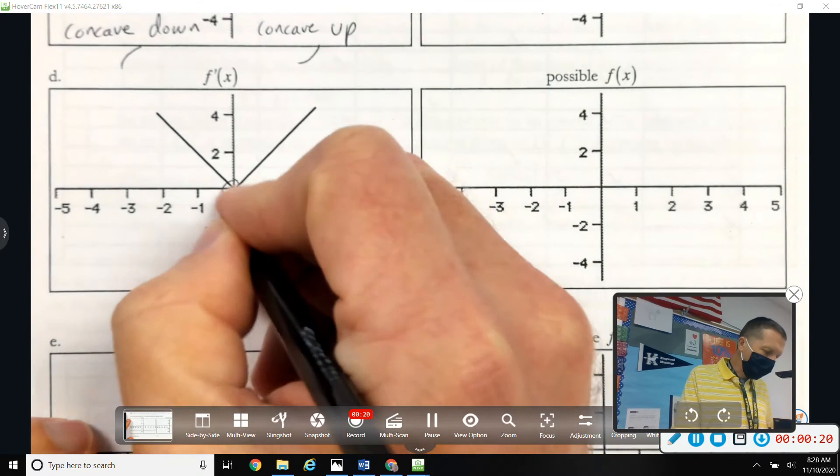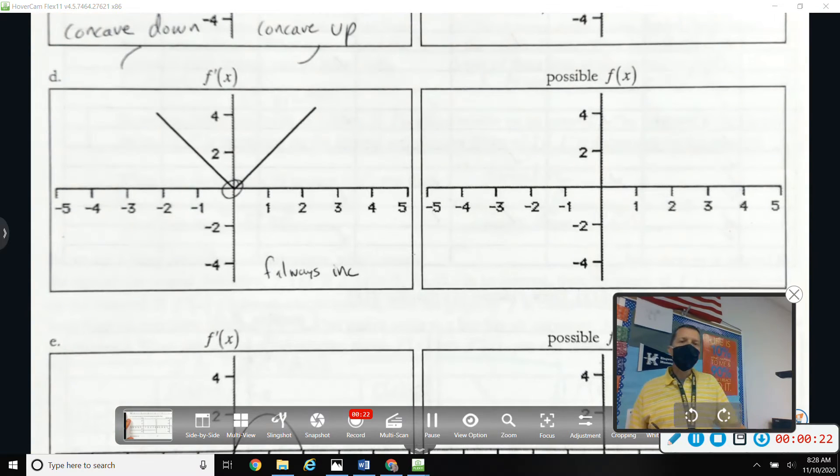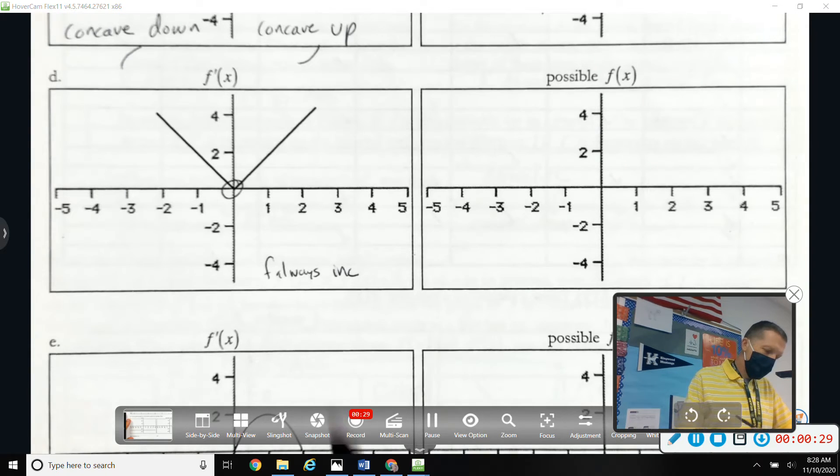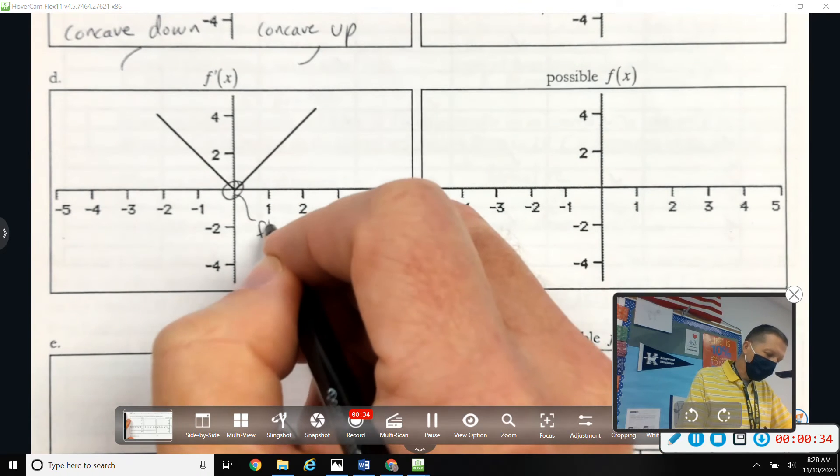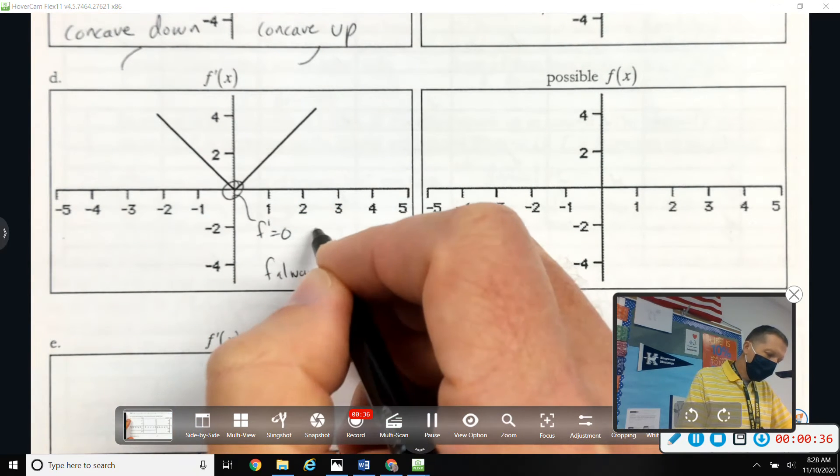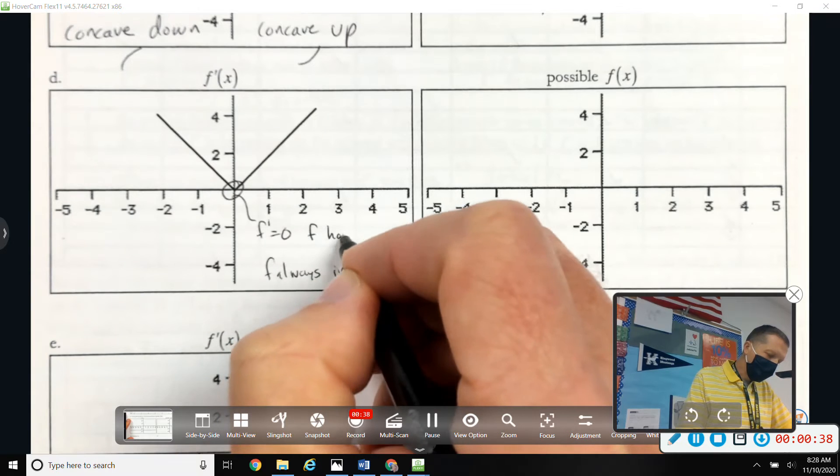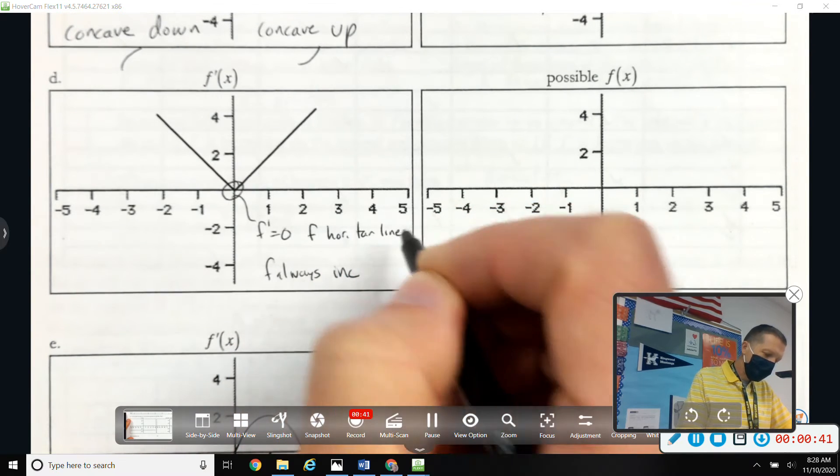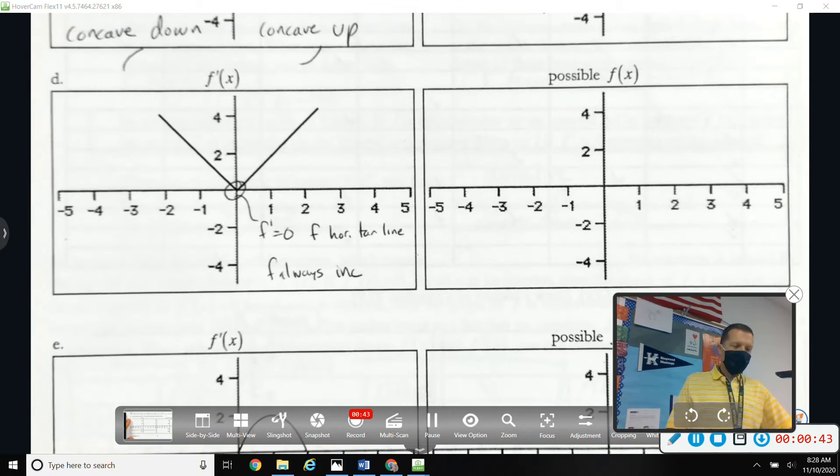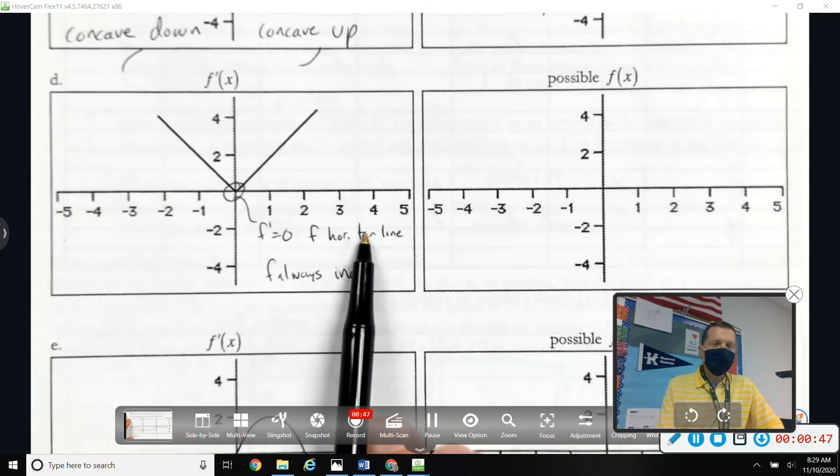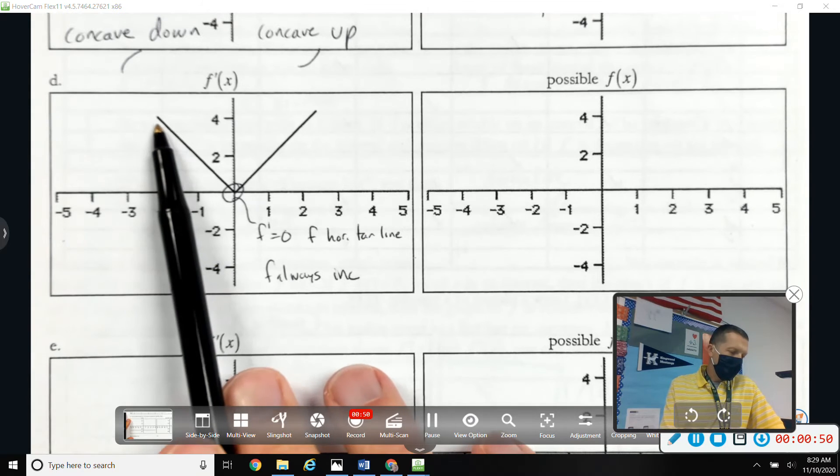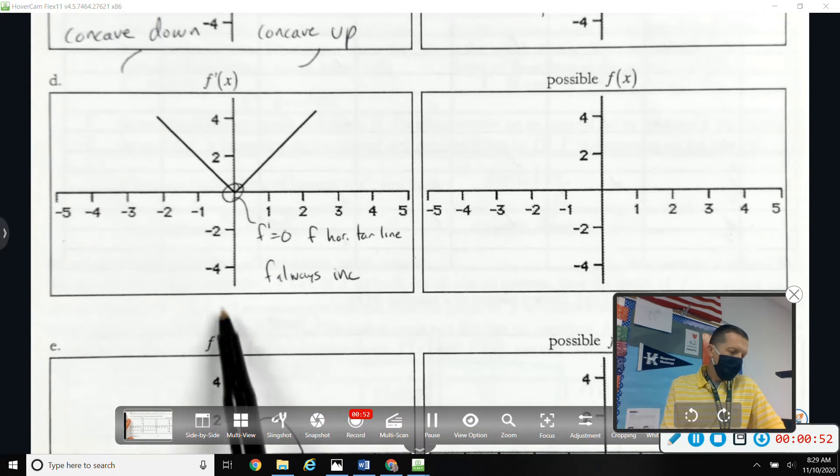Although something's going on here. What's going on there? There's a couple things going on. F prime equals zero. So that means F has a horizontal tangent line there. So I've got to always be increasing but have a horizontal tangent line.